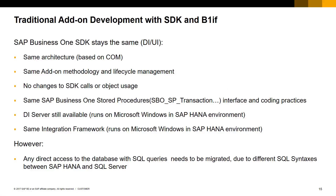As previously touched on, traditional extensibility using the SAP Business One SDK and B1IF integration framework is still available with SAP Business One for SAP HANA. The SAP Business One SDK stays the same as far as the data interface and user interface API, meaning the same architecture based on COM, the same add-on methodology and lifecycle management, no changes to the SDK calls or object usage, and the same SAP Business One stored procedures such as the SBO SPA transaction notification as far as interface and coding practices.